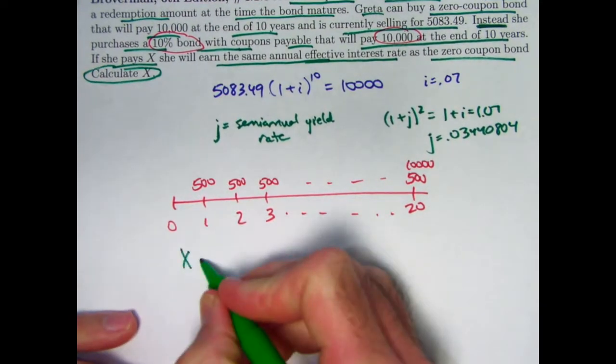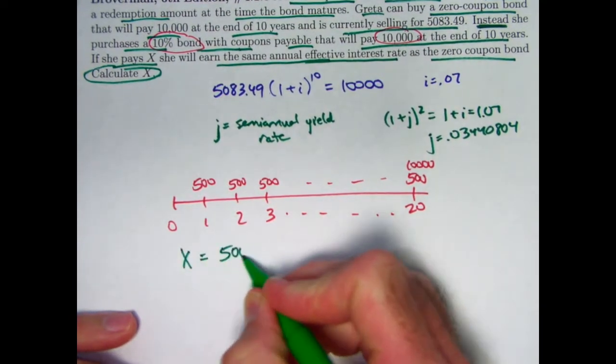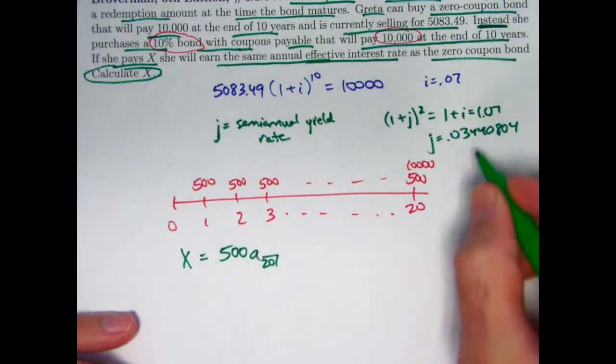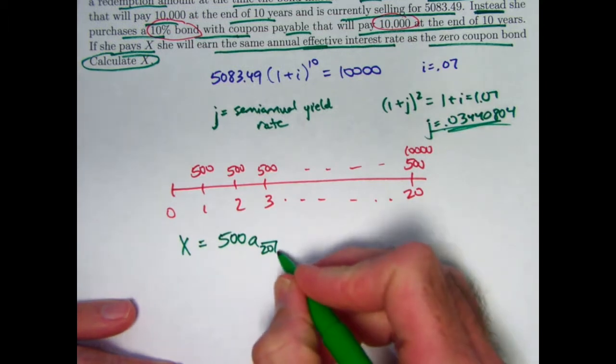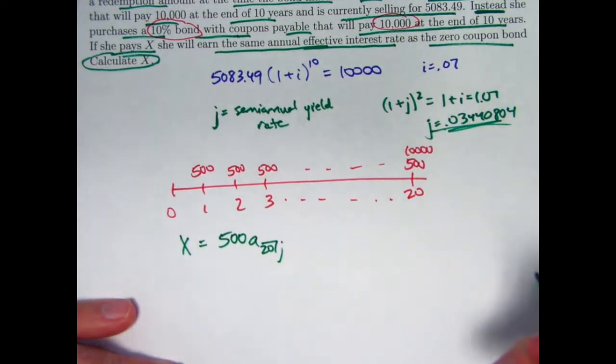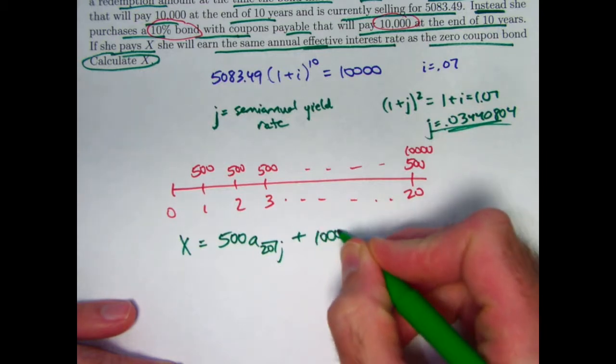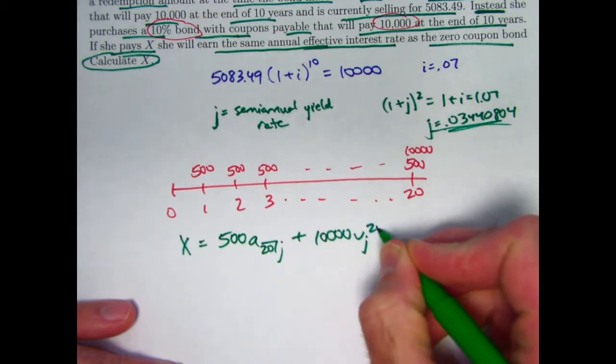So X is going to be 500 A20 at what interest rate? At this one. I'll go ahead and just write J there. Plus 10,000 V sub J to the 20th. Now it's just a matter of calculating this.